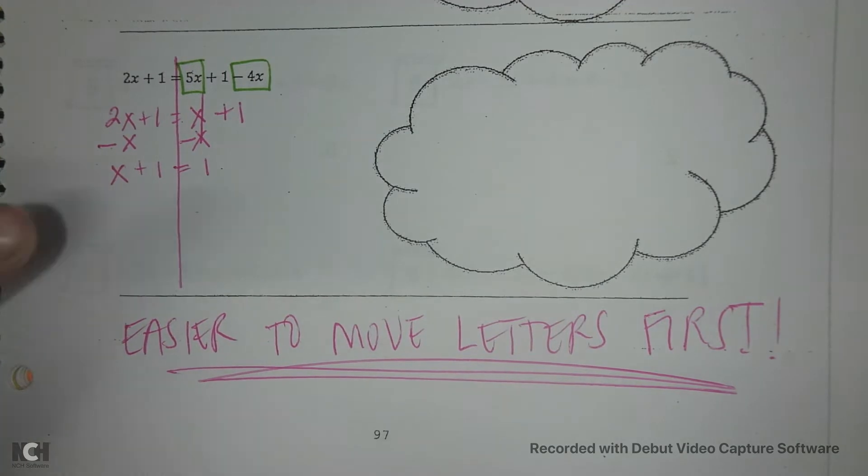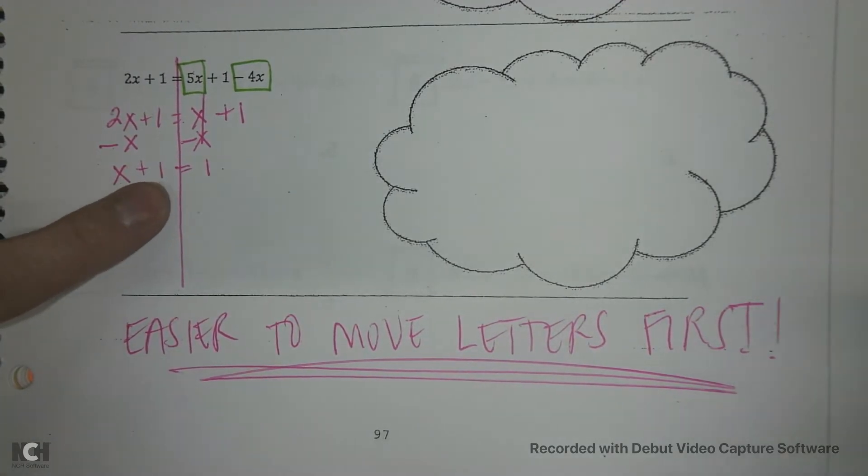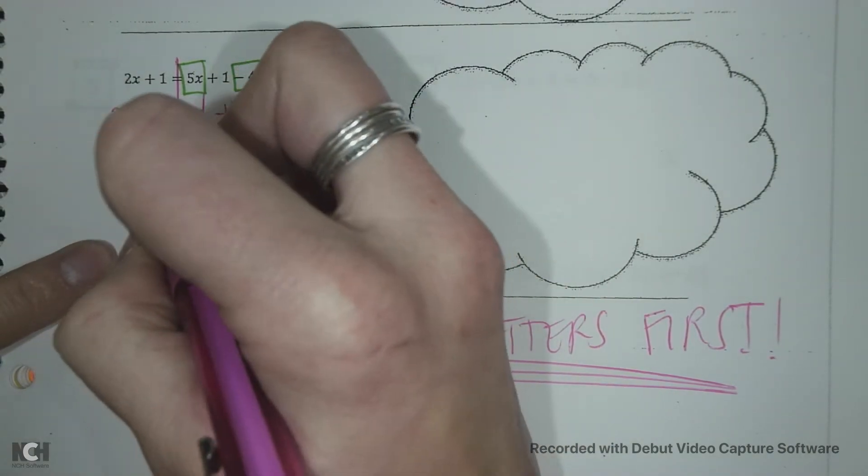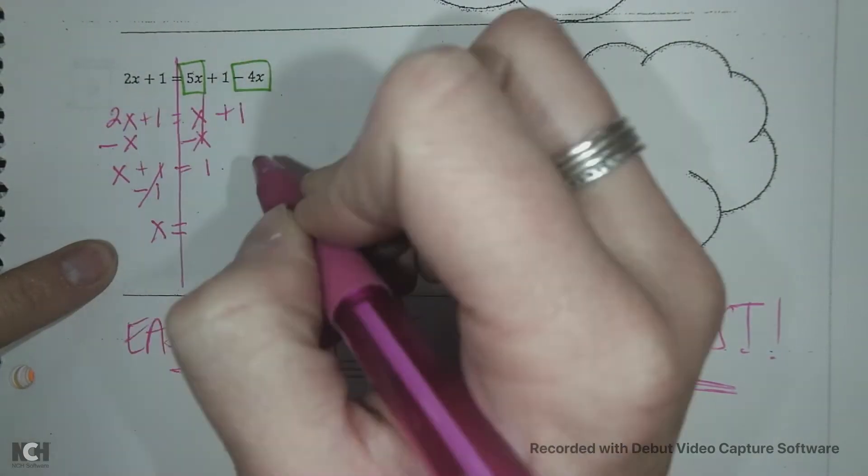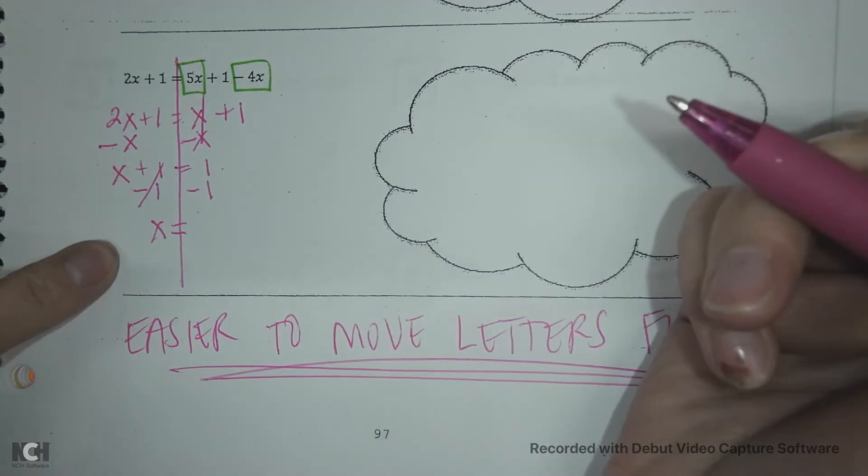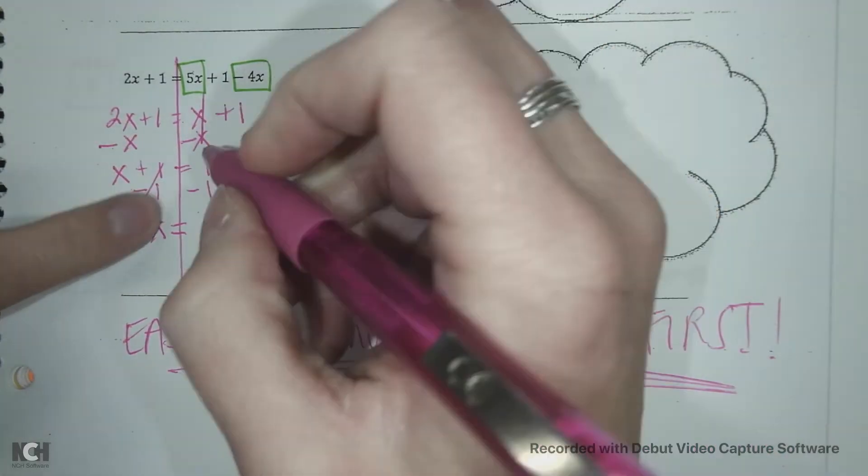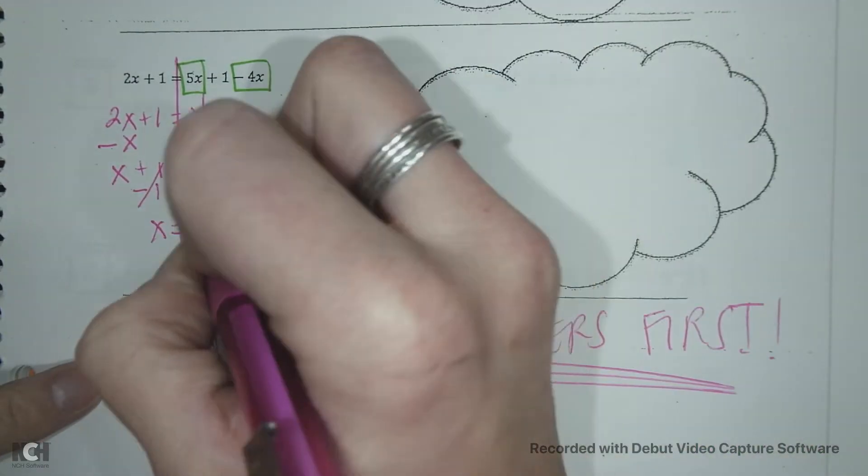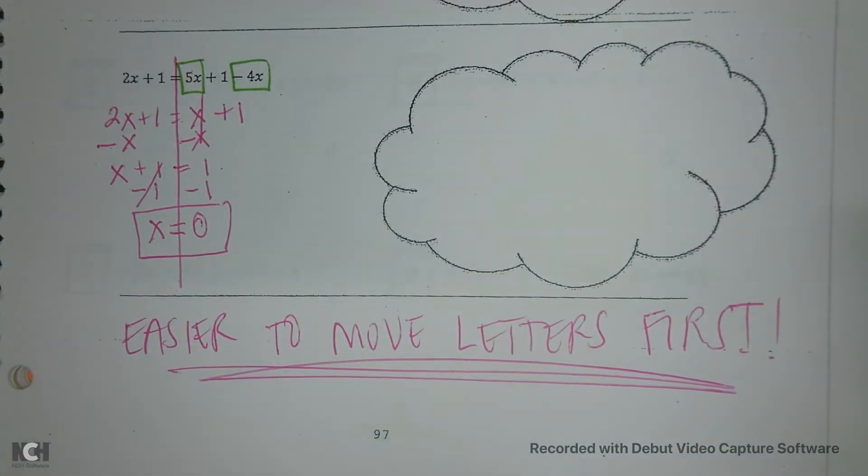Okay, we're almost there. Now we need to get the variable by itself. So it has an additional 1 over on this side. So we're going to do the opposite and subtract 1 to make it go away. And we also subtract 1 over here. 1 minus 1 is 0 and our answer is 0.